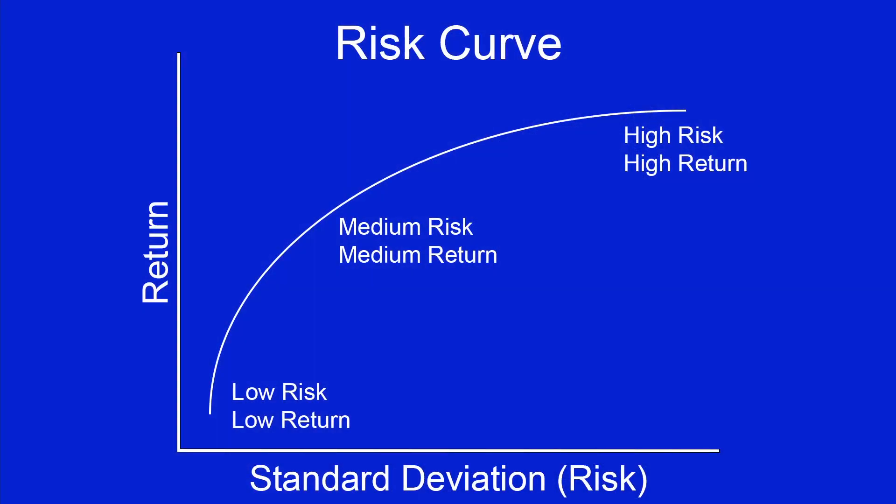An easy way to think about risk is with the risk curve. The concept is that higher risk leads to higher returns. For instance, bonds are generally less risky than stocks. As you add more risk, you expect a higher return, or it wouldn't be rational to take the extra risk. At some point, you will also want to consider if the extra risk is worth taking.